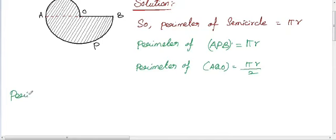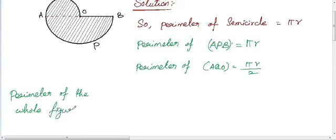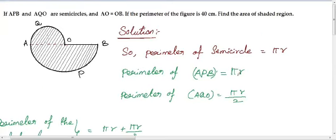The radius of the bigger semicircle is R, and the radius of the smaller semicircle is R by 2. So the perimeter of the whole figure equals πR plus πR divided by 2, where R is the radius for the bigger semicircle and R by 2 is the radius for the smaller semicircle.